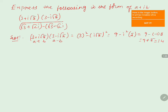Now for the denominator: root 3 plus root 2i minus of root 3 minus root 2 into i. Expanding, root 3 minus root 3 cancels, and root 2i plus root 2i gives us 2 root 2 into i.